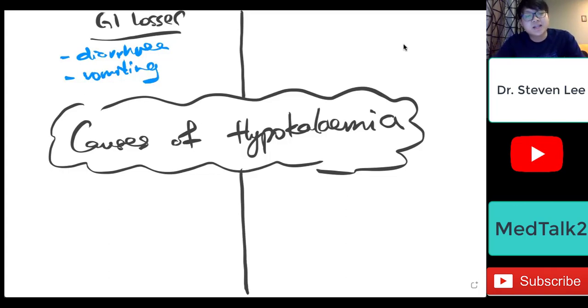Primary means there's actually a disease process that's causing diarrhea and vomiting. Secondary means maybe it's because of certain medications that cause diarrhea or vomiting, or it's because of laxatives or bowel preparations. So these are things that we can think about in terms of GI losses.